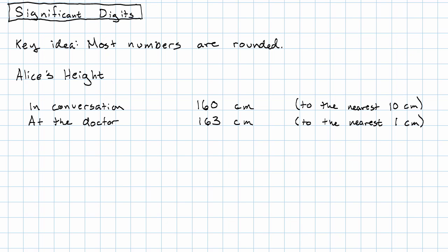Later on still, Alice reads something on the internet that says her height changes during the month because of the gravity of the moon. She doesn't really believe that, so she decides to go all MythBusters on it. She carefully measures her height at the same time every day and discovers that every day, regardless of where the moon is, her height is 162.8 centimeters. Now she's rounding to the nearest tenth of a centimeter.